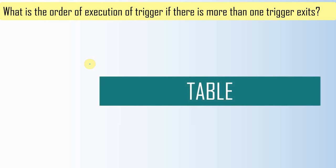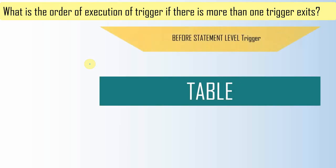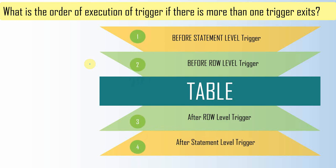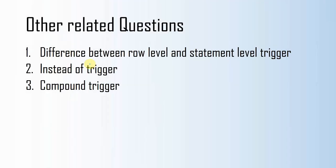So this is what we have seen: whenever a table has all four triggers, the first trigger to execute is the statement level before trigger, followed by the row level before trigger, then the actual DML operation, then the row level after trigger, and finally the statement level after trigger. There are a few other related concepts: instead-of triggers, which are written on a view rather than a table, and compound triggers, where all 12 triggers are written within a single trigger. We will cover these in a separate video.